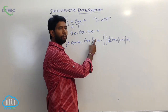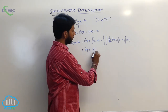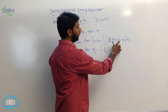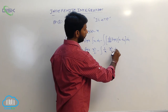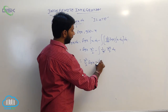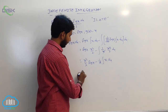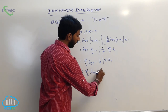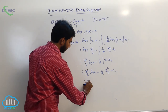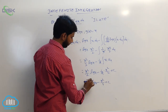The integral of x is of the form x^n, giving x²/2. So we get log(x) into x²/2, minus integral of 1/x into x²/2 dx. Here 1/x and x cancel one factor, giving x²/2 into log(x) minus 1/2 into integral of x dx. Integral of x is again of the form x^n, giving x²/2. Therefore the value is x²/2 · log(x) minus x²/4 plus constant.